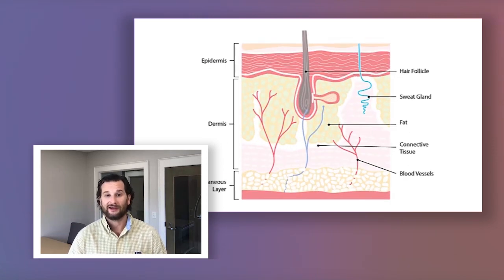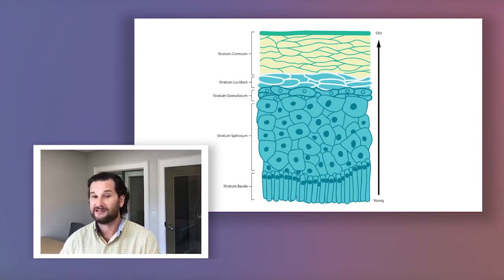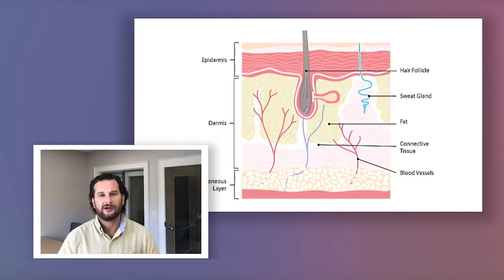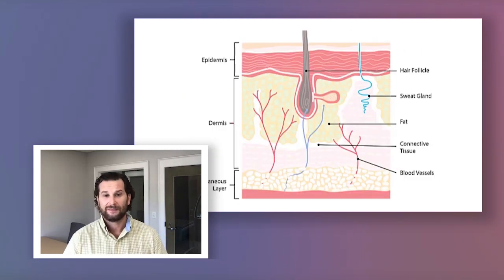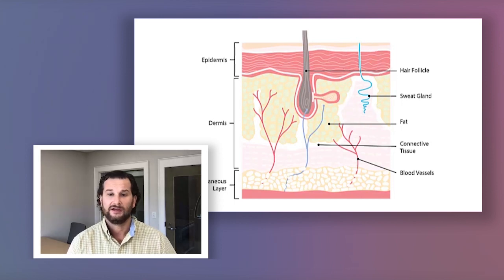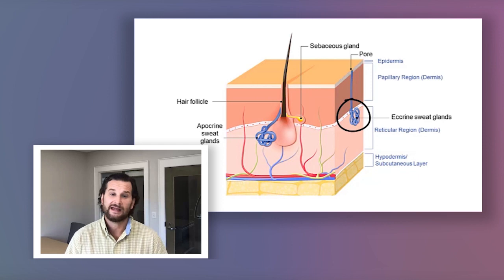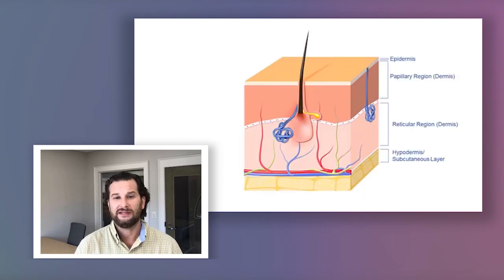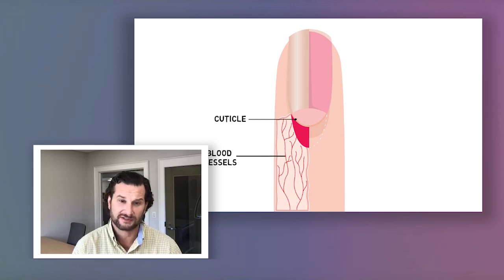The integumentary system — know this system pretty well. This covers your skin, hair, and nails. Know the layers of the skin: epidermis, keratin, subcutaneous, the dermis layer, the hypodermis, and glands. Glands include sweat glands, the apocrine, the eccrine, and the sebaceous glands.